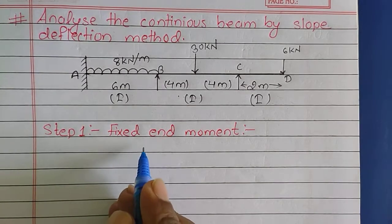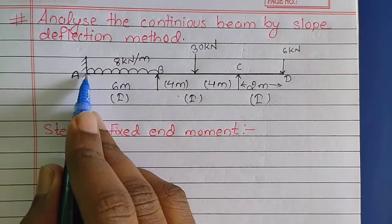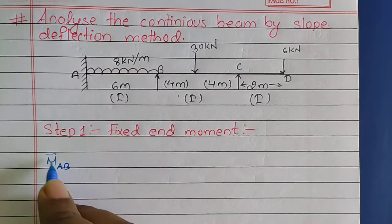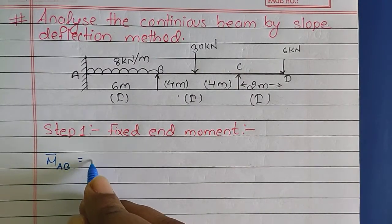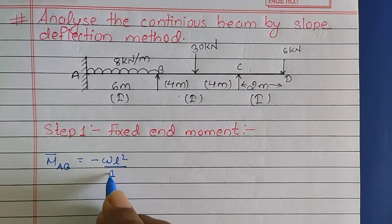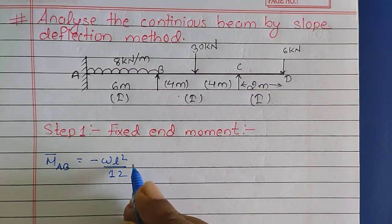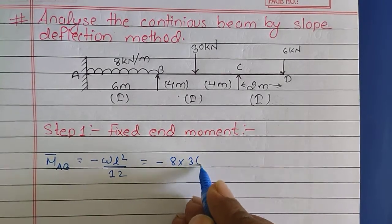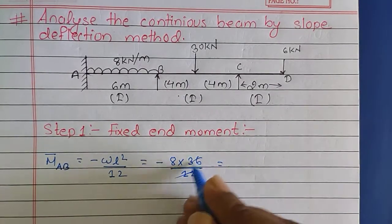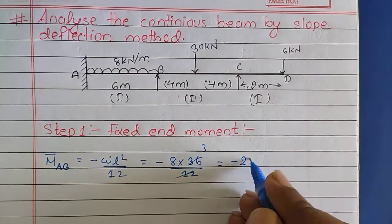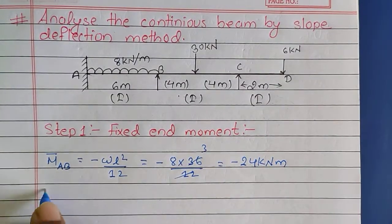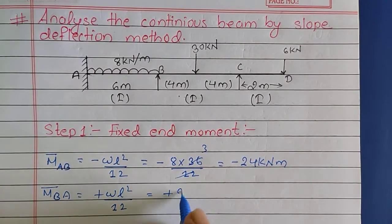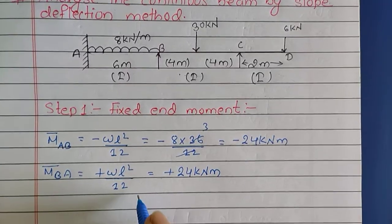In step one we find the fixed-end moments. The fixed-end moment at end A, denoted M̄AB, equals -wL²/12, which gives -8 × 36 / 12 = -24 kNm. Similarly, M̄BA equals +wL²/12 = +24 kNm. Now we find the fixed-end moment for span BC. Since the 30 kN load acts at mid span, we use the formula -WL/8.